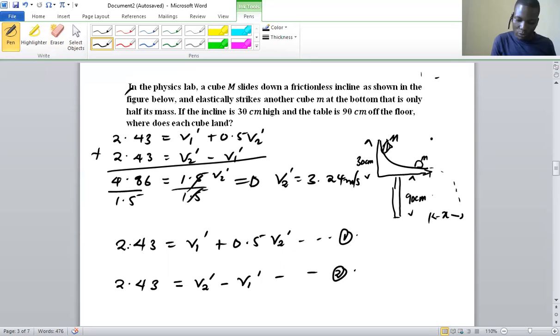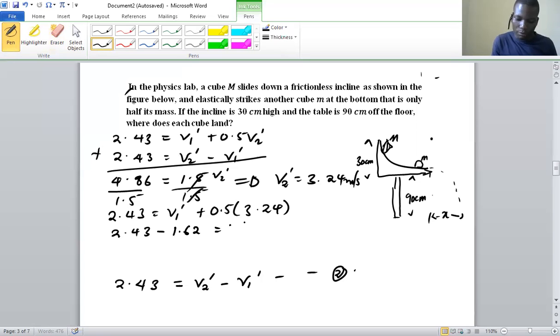So if we put into equation one, we have 2.43 being equal to v1 prime plus 0.5 multiplied by 3.24. So what do we get? We get 1.62. We bring it to the other side and what we are going to have is 2.43 minus 1.62 will be equal to v1 prime. So we have v1 prime will be equal to 0.81 meters per second.